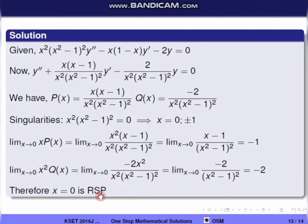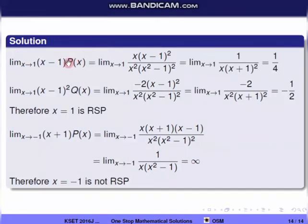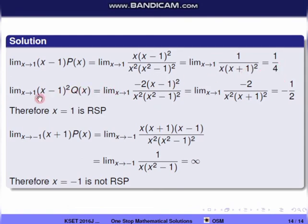Checking x = 1: lim(x→1) (x−1)·p(x) = lim(x→1) x(x−1)²/[x²(x²−1)²] = lim(x→1) 1/[x(x+1)²] = 1/4, which is finite. Similarly, lim(x→1) (x−1)²·q(x) is finite. So x = 1 is also a regular singular point.